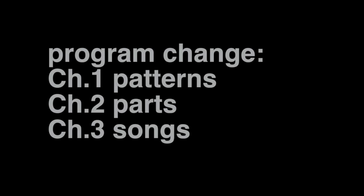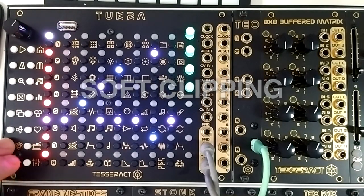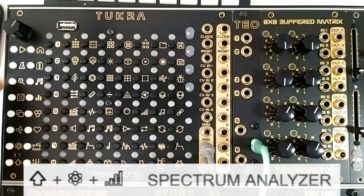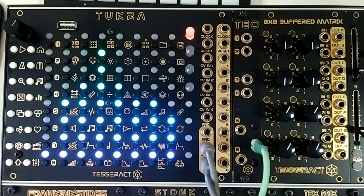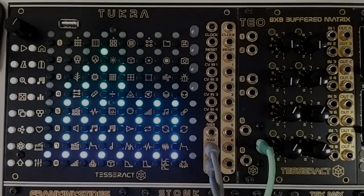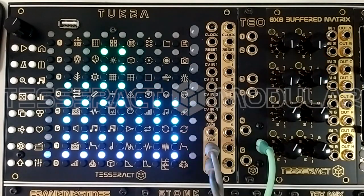Patterns, parts and songs can be called by using program change MIDI messages. Program change messages with channel 1 will change the patterns, with channel 2 will change the part, and with channel 3 the song, and these changes will perform immediately. A soft clipping has been added to the mixer. Clicking function, shift and volume buttons will start the spectrum analyzer. The rightmost column of LEDs is the VU meter. Here you can see the difference before and after applying the soft clipping.